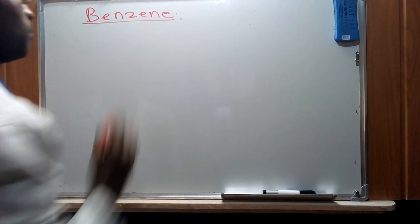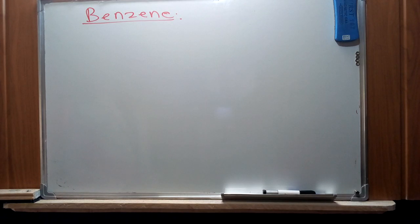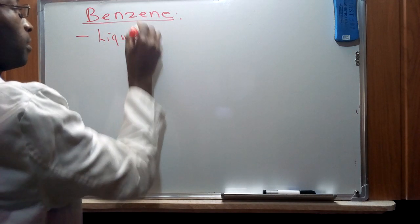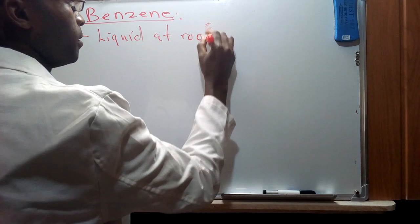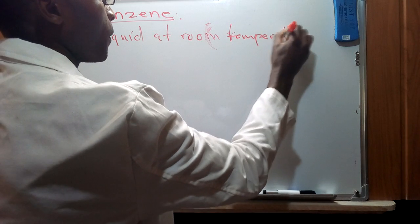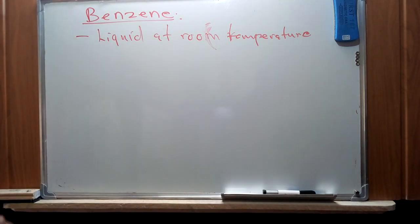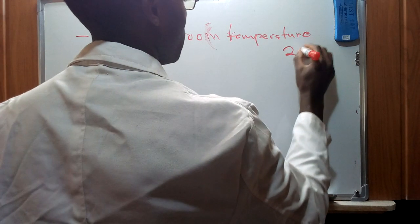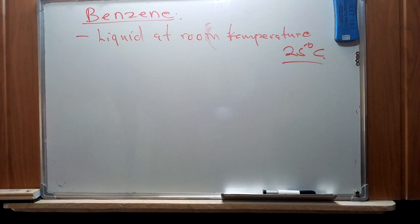Today we're going to learn about the structure of benzene, which is a short concept that will assist us in determining its physical and chemical properties and help us interpret any information we come across pertaining to the benzene molecule. Benzene is a liquid at room temperature, which we take as 25 degrees Celsius, and it is also a good solvent.